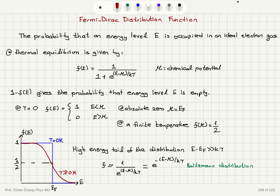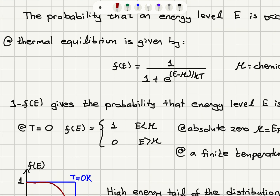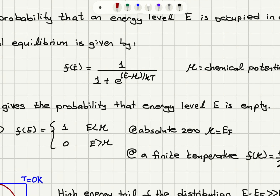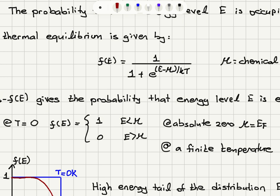1 minus F(E) gives us the probability that energy level E is empty. If E is less than μ at T = 0, we have e^(−∞) in the exponential, which gives 0, so the Fermi-Dirac distribution function gives 1. For E greater than μ at T = 0, the exponential blows up, so we have 0.